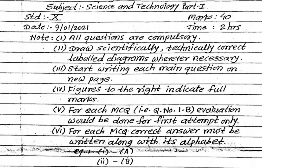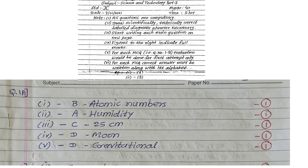First of all, all students read the notes given in question paper. All questions are compulsory, draw scientifically correct diagrams with labels wherever necessary. Figures to the right indicate full marks. Write MCQ in the given pattern, option numbers are given there. Write the option number. First correct answer is suppose A, so first A, no need to write what is given in that.